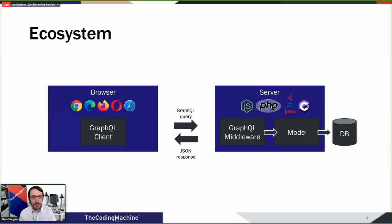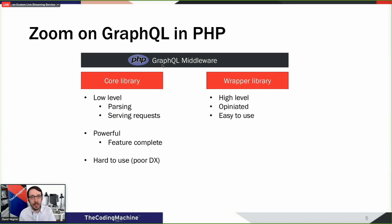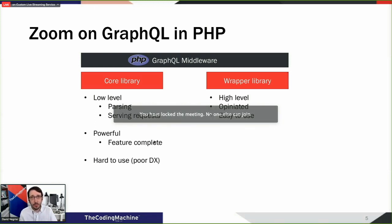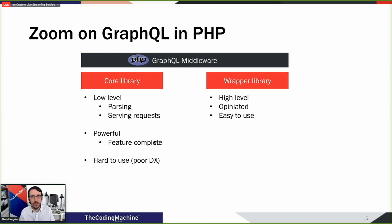Today we're zooming on PHP. If we look at PHP GraphQL middlewares, there are two kinds. I call them core libraries and wrapper libraries. Core libraries are quite low level — they parse GraphQL queries and serve responses in JSON. They are powerful but hard to use, and the developer experience is poor.